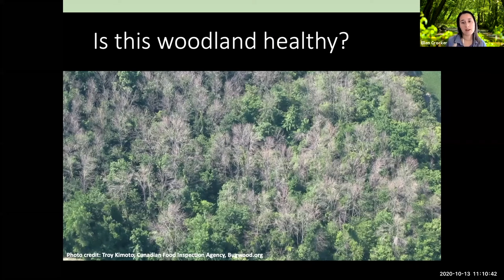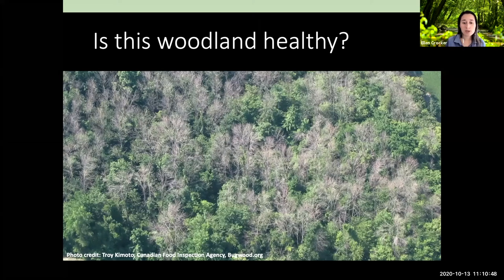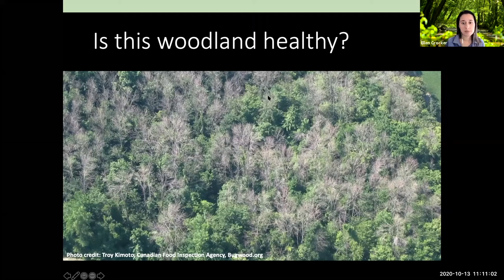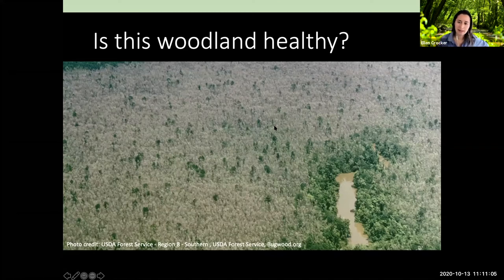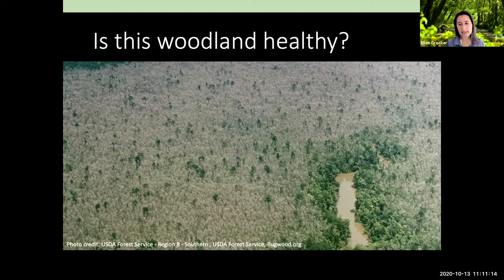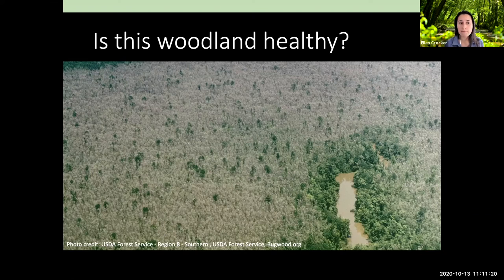If you had the state average for ash — which was about four percent of the trees in our woods — that's not good, and it's terrible to lose that biodiversity, because lots of other things depend on ash. But that's something our woods can rebound from because we have great diversity and lots of other trees that can take their place. However, if you have 30, 40, or 50 percent ash like in this photo, then it becomes a really big problem and a huge disturbance in your woods.